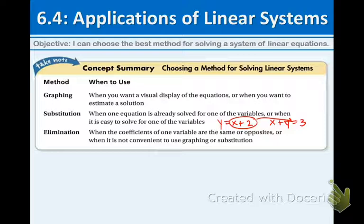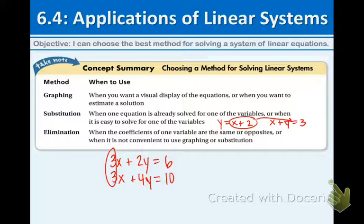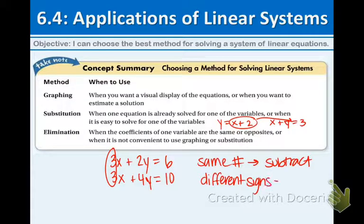And lastly, elimination from the most recent section 6.3. We would like to use elimination when the coefficients of one of the variables are the same or opposites. An example of this would be 3x plus 2y equals 6, 3x plus 4y equals 10. As you can see, the 3's are the same number. When the numbers are the same, you want to subtract to get rid of them. And when you have different signs, then you want to add.